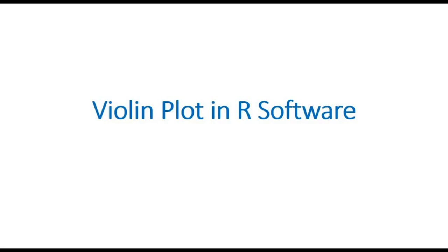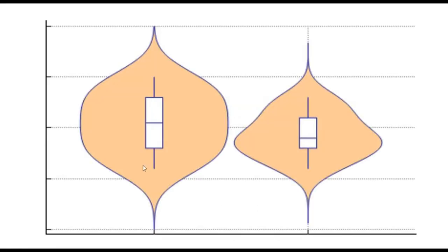Hello friends, I am Hemonta Soikia and today I am going to talk about how to draw a violin plot using R software. The violin plot is a method of plotting numeric data and can be considered as a combination of a box plot with a kernel density plot. This plot is known as a violin plot as it looks like a violin. A violin plot usually depicts the distribution of numeric data for one or more groups using density curves.